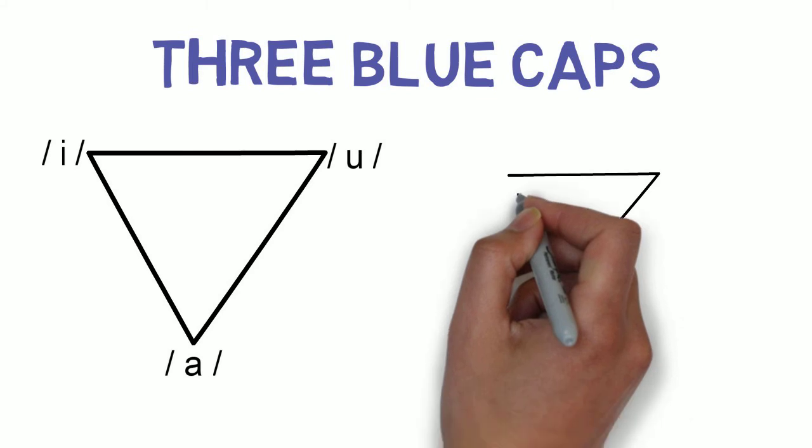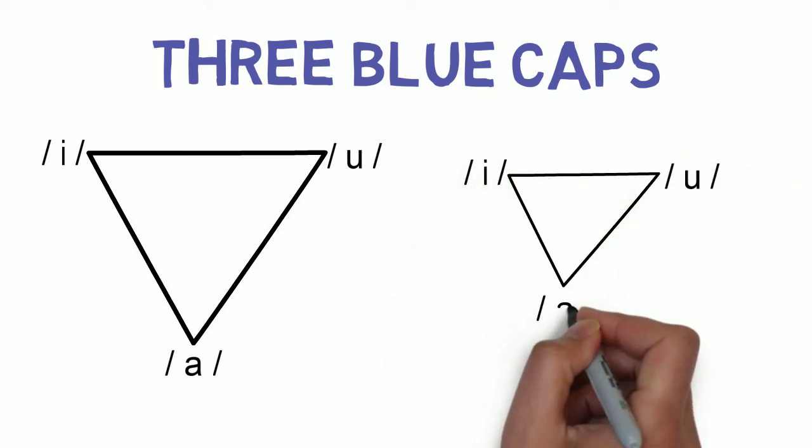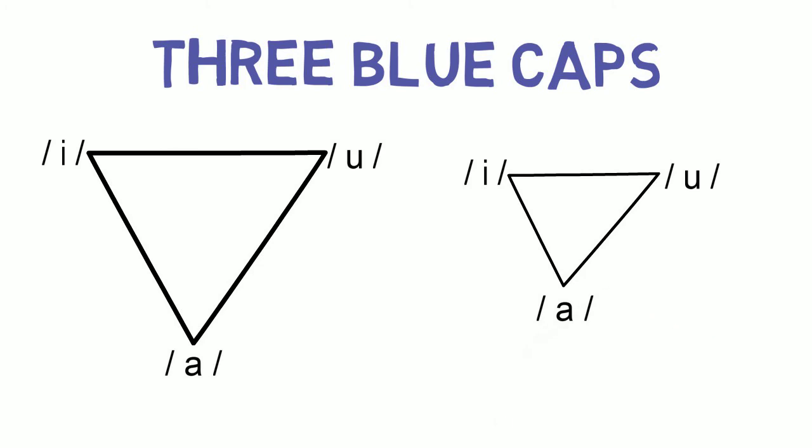A small vowel space, on the other hand, is one where the tongue does not move as much between the corner vowels. For example, three blue cups.